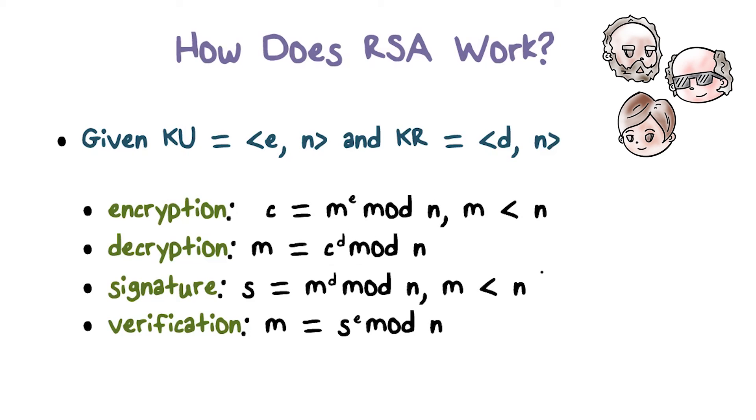What about creating digital signature? Alice will use her own private key to raise the message m to the power of d mod n. To verify, Bob would get Alice's public key, raise the signature to the power of e and mod n, and this will produce the original message m and verify the signature.